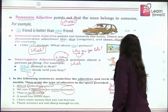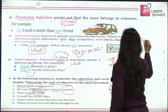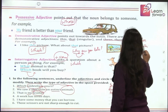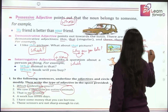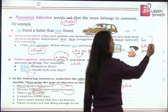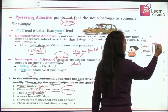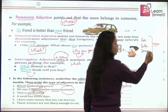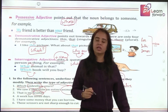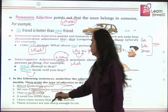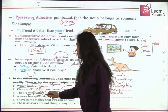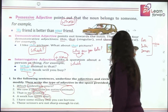So remember: for possessive, interrogative, and demonstrative adjectives, always remember there must be a noun immediately after them. If there is no noun, it will not be an adjective. Next: 'A week has seven days.' Seven is the adjective of number.